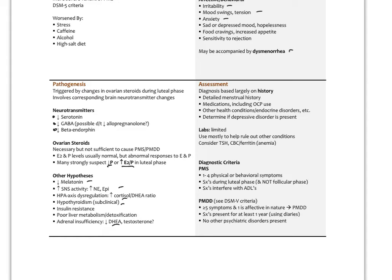The diagnostic criteria for PMS are to have one to four physical or behavioral symptoms, during the luteal phase and not during the follicular phase, and symptoms interfere with activities of daily living. For PMDD, according to DSM-5, you need five or more symptoms with at least one affective in nature, symptoms present for at least a year using symptom diaries, and no other co-diagnosed psychiatric disorders like generalized anxiety disorder or major depressive disorder.